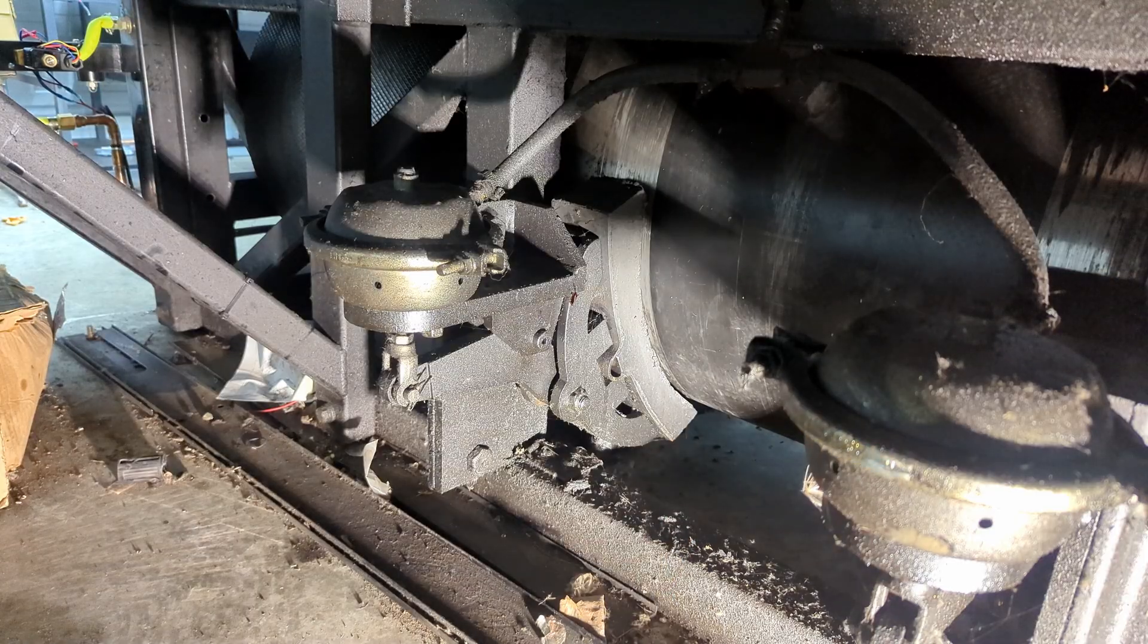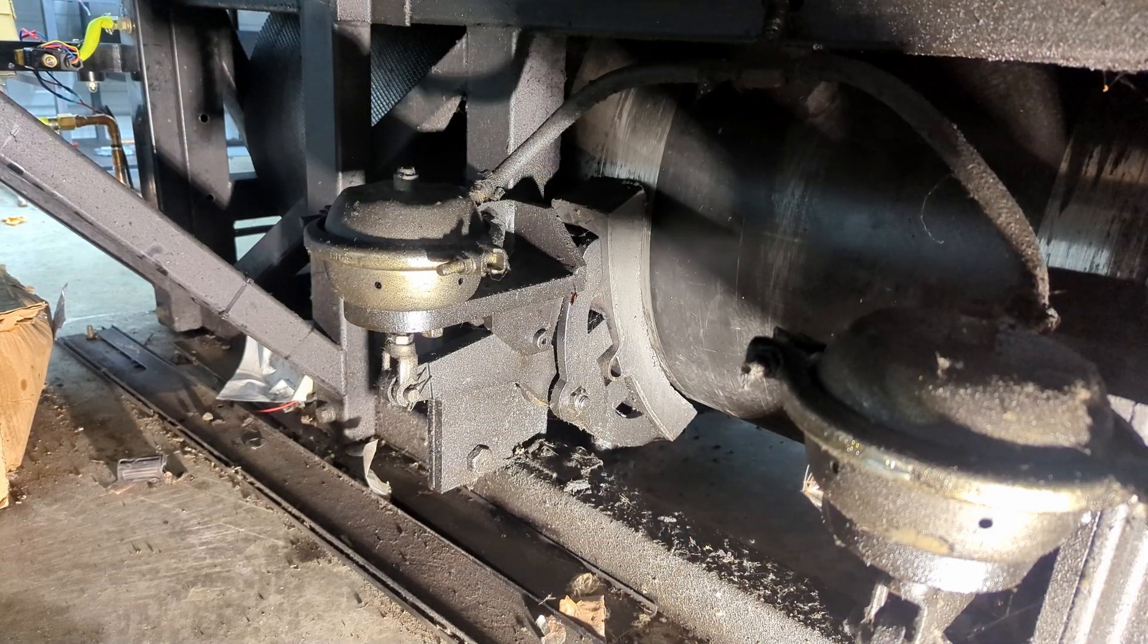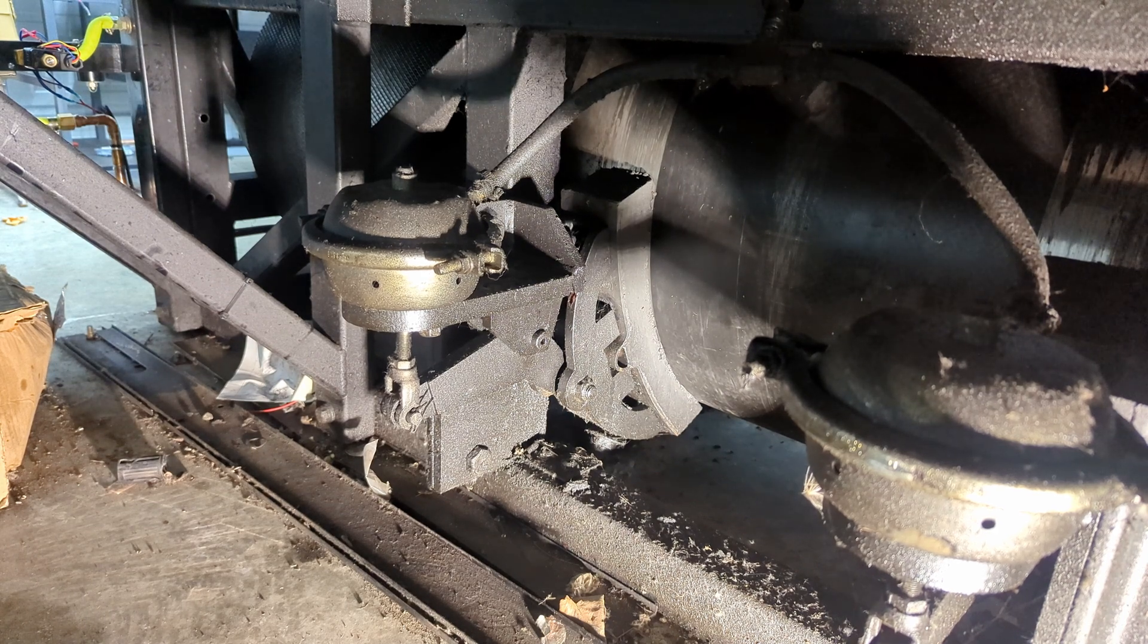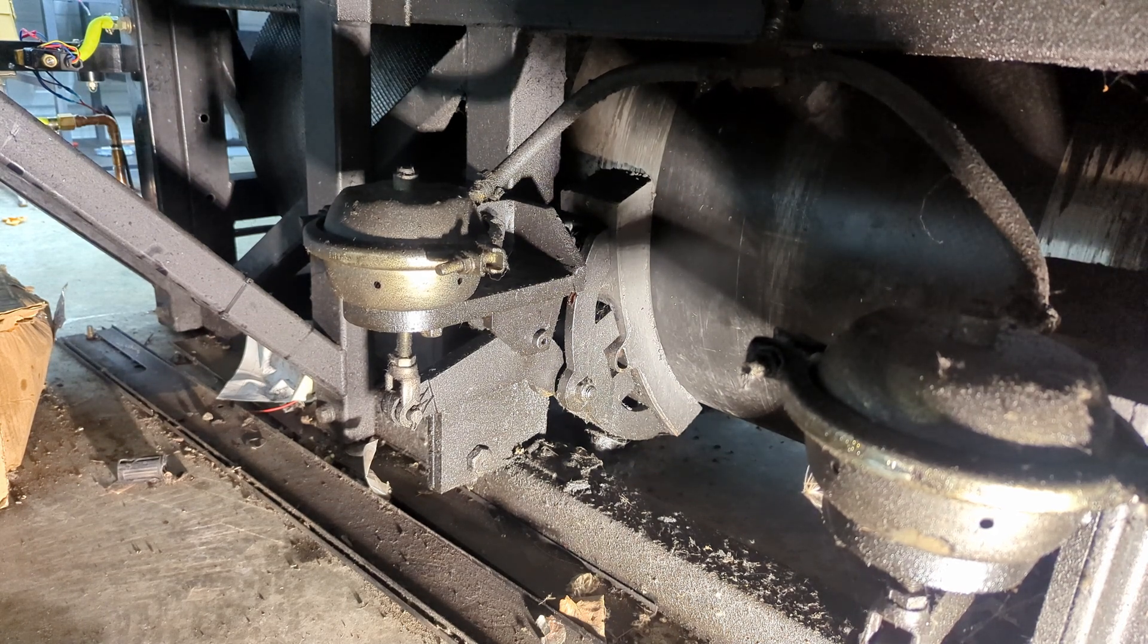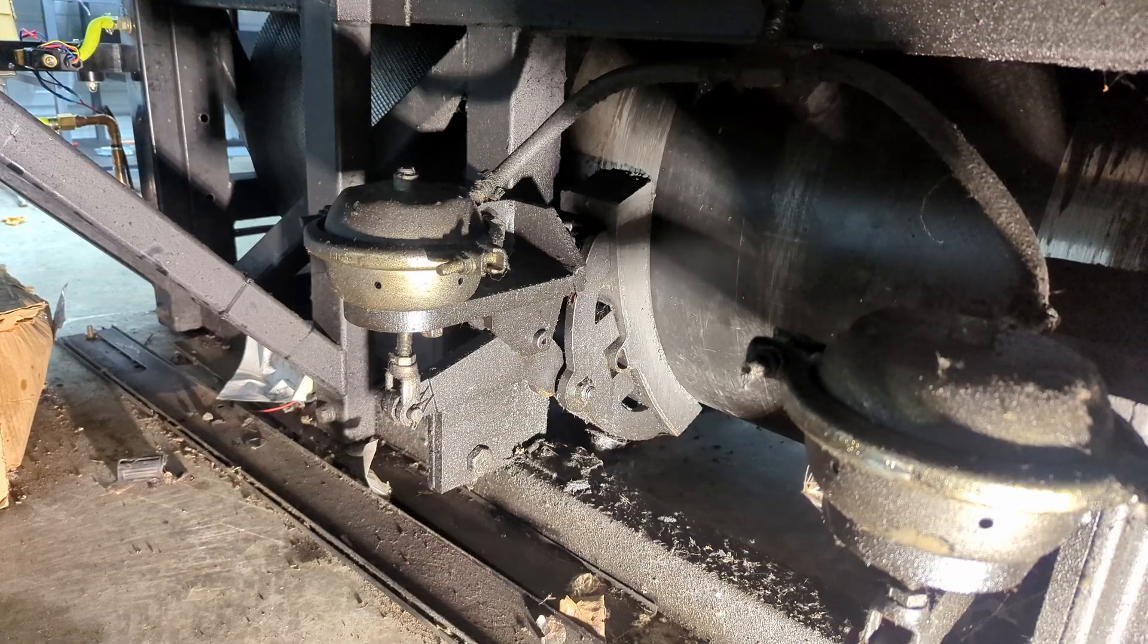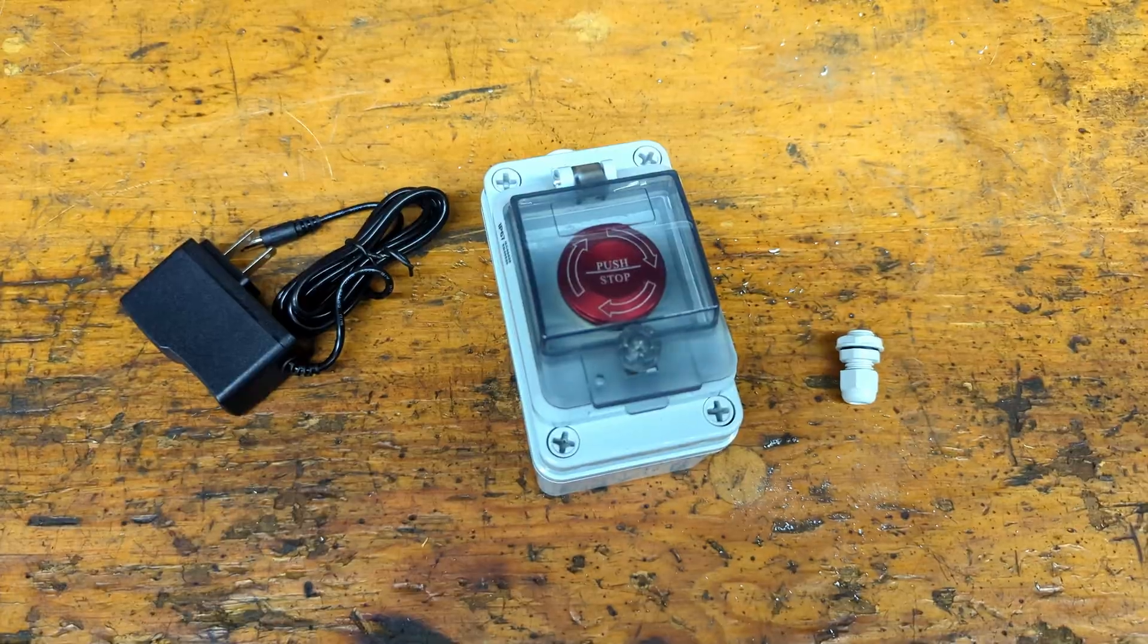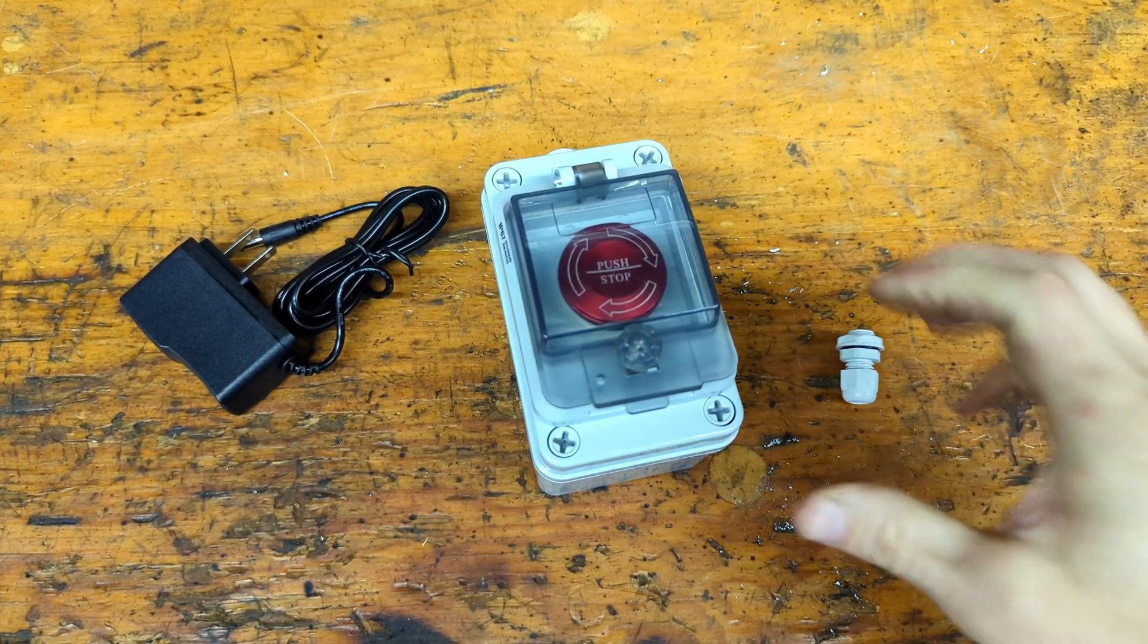And then it presses a pair of brake shoes up against the drum to prevent it from rolling. For the emergency stop I'm going to be using this button that I got from Amazon.